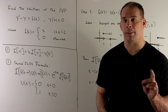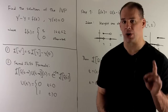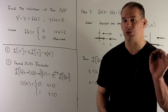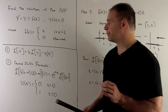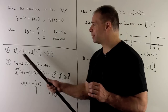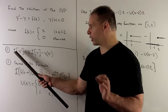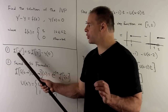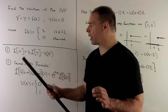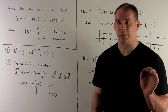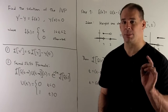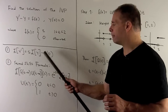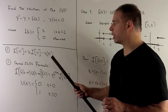We're going to solve this using the Laplace transform, so we're going to need two formulas. First, the Laplace transform of a derivative: if we have the Laplace transform of y prime, it's going to be equal to s times the Laplace transform of y minus y of zero.